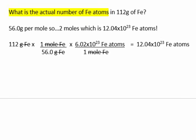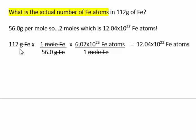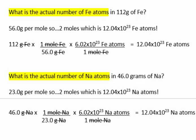What is the actual number of iron atoms in 112 grams of iron? 112 grams is twice 56, and 56 grams is the molar mass, so there's two moles. The actual number of iron atoms is twice 6.02 times 10 to the 23rd, or 12.04 times 10 to the 23rd. The setup starts with 112 grams, divide by 56 to convert to moles, then multiply by Avogadro's number. Similarly, if we had 46 grams of sodium, which is 2 moles of sodium, we would get the exact same answer.